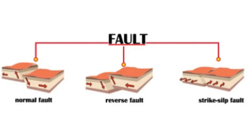In a strike-slip fault, rocks on either side of the fracture move horizontally past one another. This can occur along transform plate boundaries, where two tectonic plates are moving past each other.